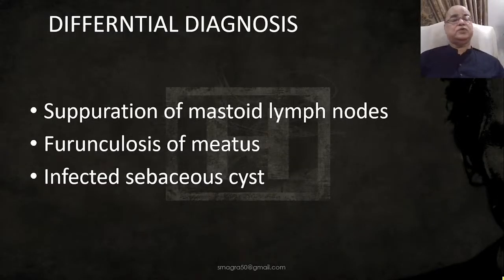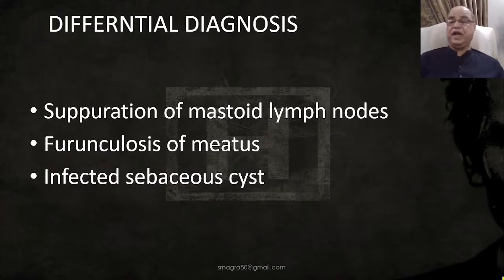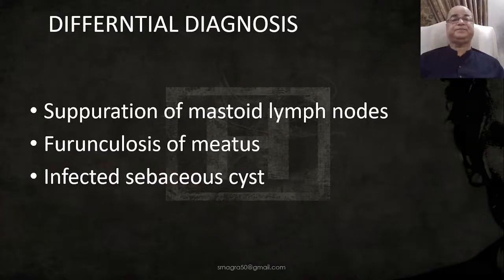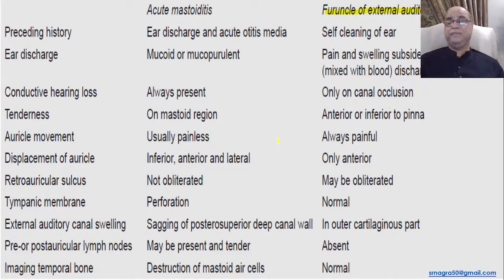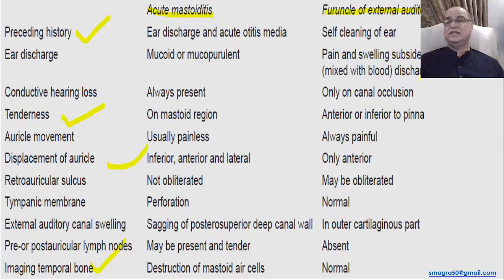In the differential diagnosis, we should keep in mind suppuration of superficial mastoid lymph nodes, infected sebaceous cysts in the post-auricular region, or furuncle of the external auditory canal. There is a table — also shared when we discussed furuncle of the external auditory canal — that differentiates acute mastoiditis from furuncle of the external auditory canal based on history, clinical features, and radiology.